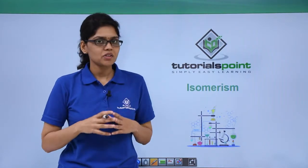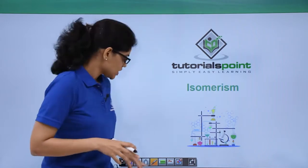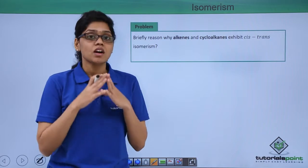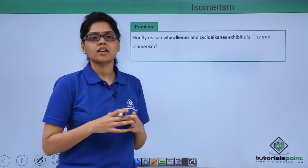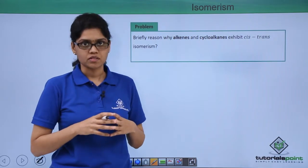Hello everyone, in this video we are going to discuss a problem based on the concept of isomerism. The question asked here is that we need to briefly explain why alkenes and cycloalkanes exhibit cis-trans isomerism or geometrical isomerism.